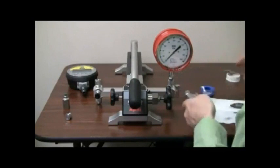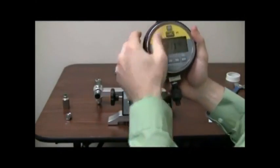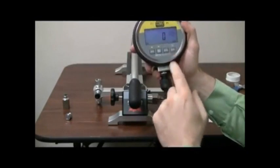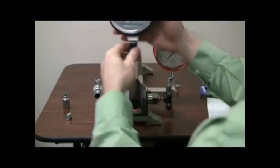Now on the second gauge, I'm using our quick test fitting, which has a built-in O-ring that prevents this whole process. Just hand-tighten and you're ready to go.